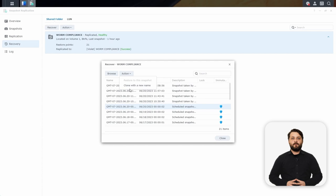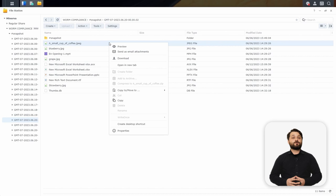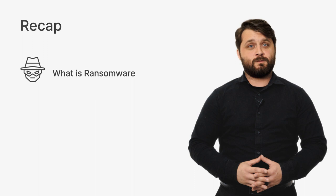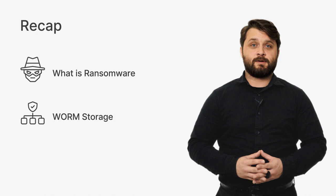Now that we have immutable snapshots enabled and a WORM compliance folder, we have a strong counter against ransomware. Let's recap and go over some next steps. We started off by looking at ransomware so we could understand this threat and address it accordingly. One of the ways we counter ransomware is by using immutable storage with write-once-read-many technology to help guard our sensitive data. You can also use immutable snapshots to further guard your data against ransomware.